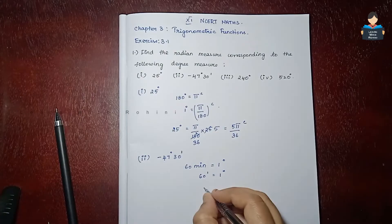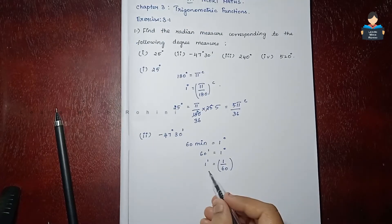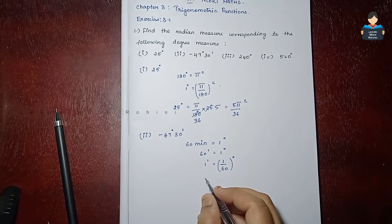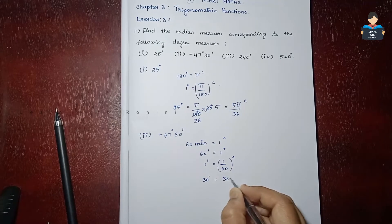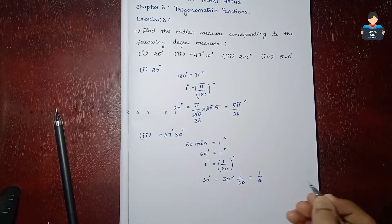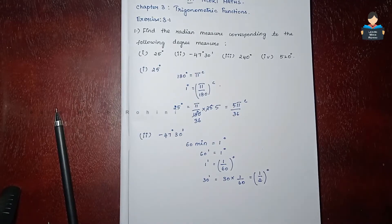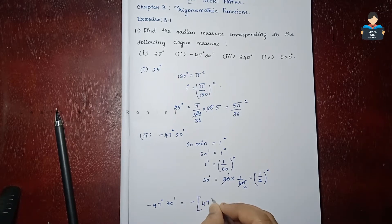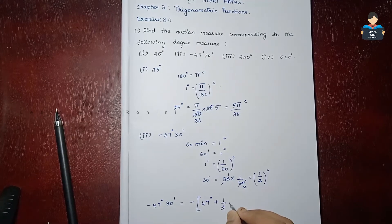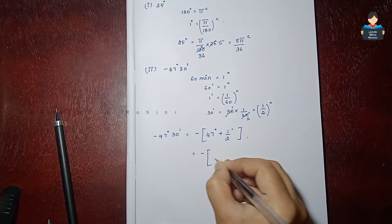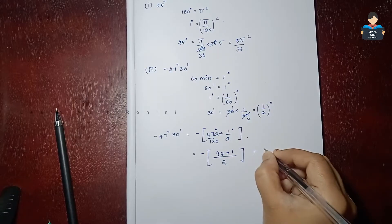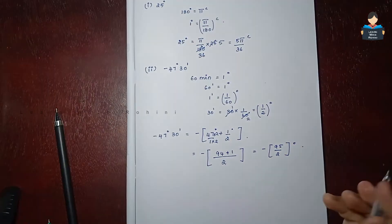1 minute is equal to 1 by 60 degree. So 30 minutes is equal to 30 into 1 by 60, that is 1 by 2 degree. So minus 47 degrees 30 minutes becomes minus 47 degrees plus 1 by 2 degree. We calculate: 2 into 47 is 94, plus 1 gives 95. That is equal to minus 95 by 2 degree.